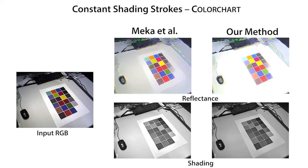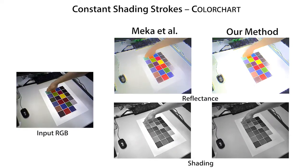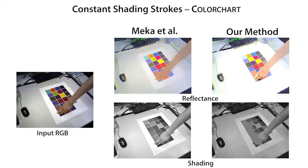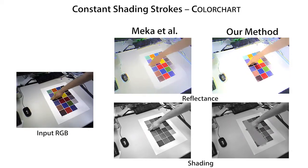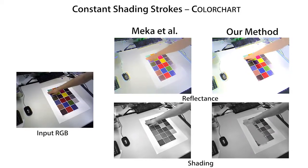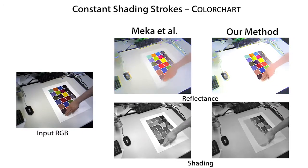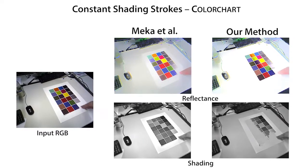Here are some more results. The brightness variation of the color blocks in the shading image is inaccurate. We improve it with constant shading strokes. Observe that the brightness of the reflectance image also improves.